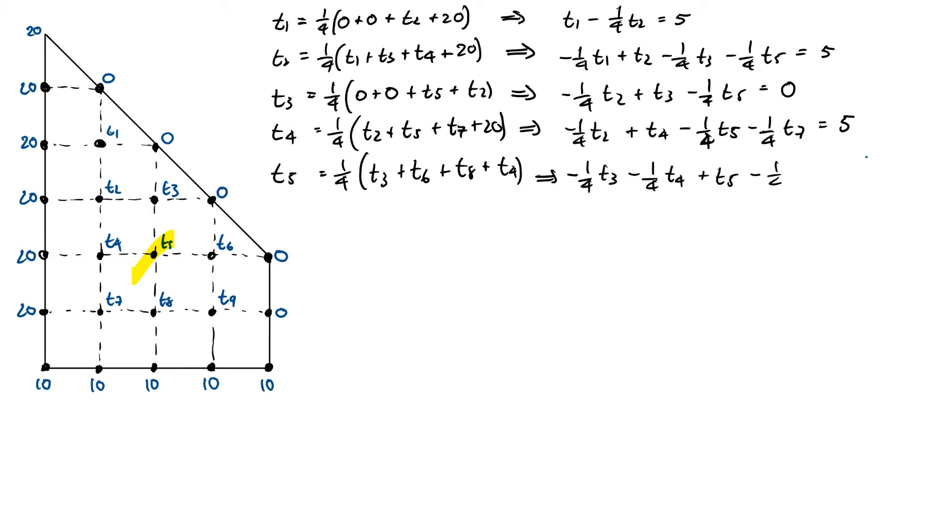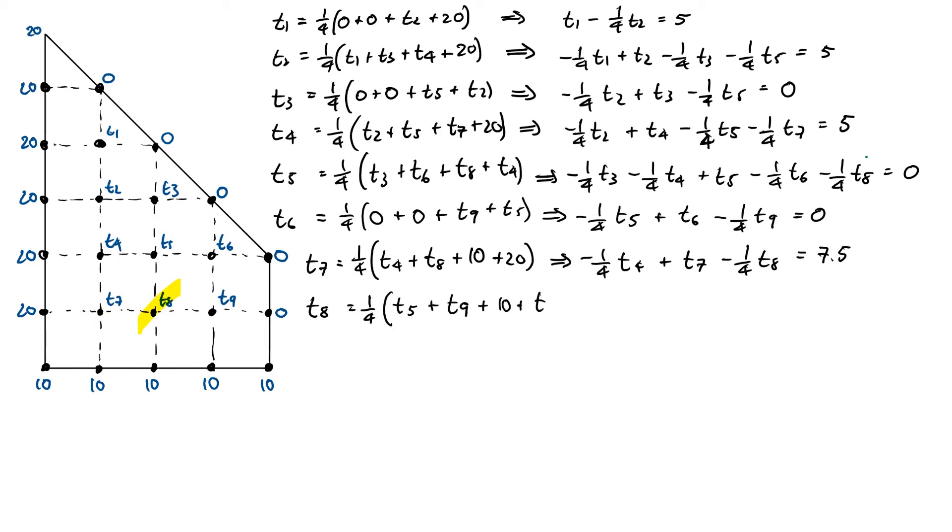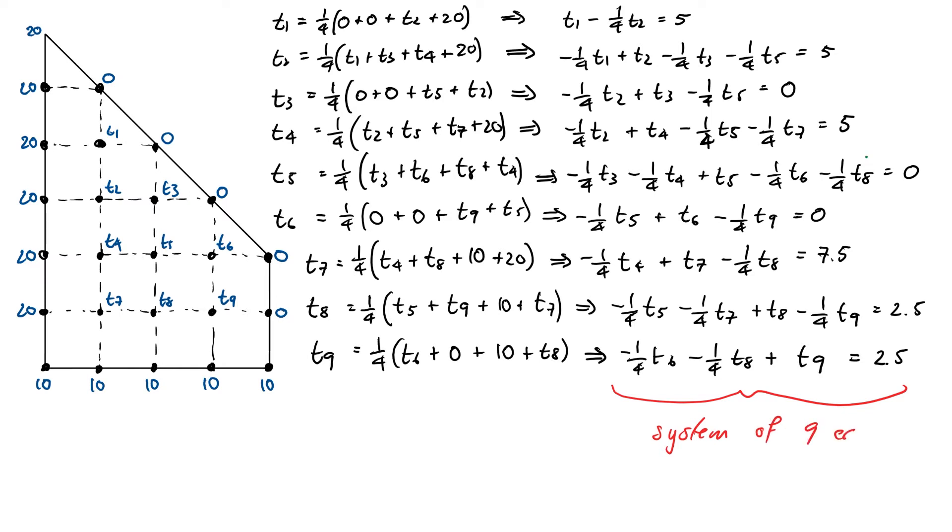T6 will be a quarter of zero plus zero plus T9 plus T5. And then T7 will be a quarter of T4 plus T8 plus T10 plus 20. Two more. T8 will be a quarter of T5 plus T9 plus T10 plus T7. And then finally, this will give us T9 is a quarter of T6 plus zero plus T10 plus T8. Okay, let's just take a breather for a second. So what we have here, if we were to rearrange these slightly, each one of these equations is a linear equation in some of the T's.